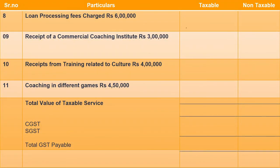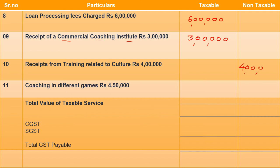Point 8: loan processing fees — this will be taxable, ₹6,00,000. Point 9: receipts from commercial coaching institute — commercial coaching will be taxable. Point 10: receipts from training relating to culture — we studied that if it relates to culture or hobby classes, that will be exempted, non-taxable.